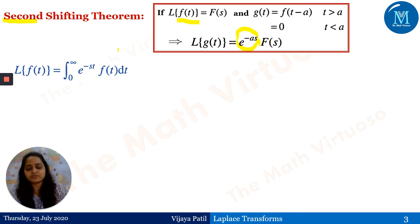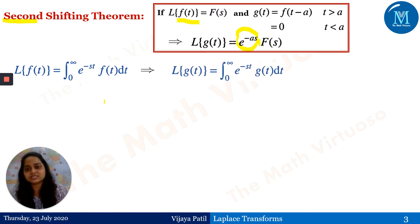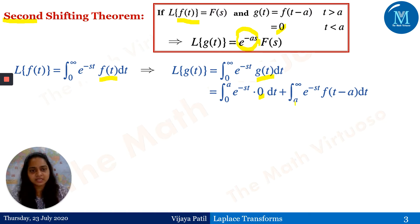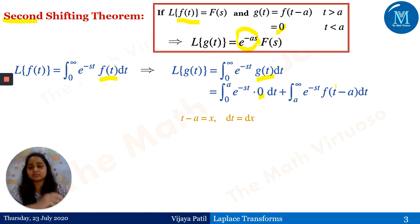Now let us run through the proof. The Laplace of f(t) is the integral from zero to infinity of e to the power minus st times f(t) dt, which is the definition of the Laplace transform. Now f(t) is replaced by g(t). This g(t) is defined as zero from zero to a, and equals f(t minus a) from a to infinity.